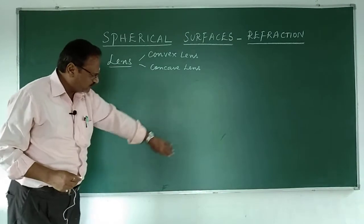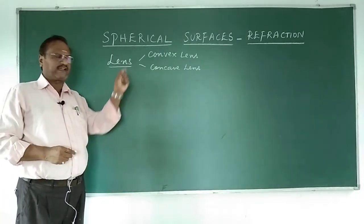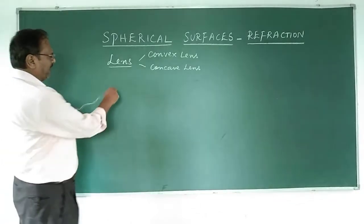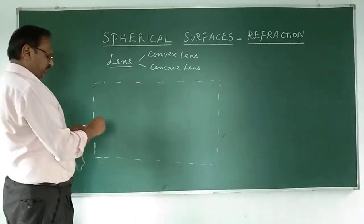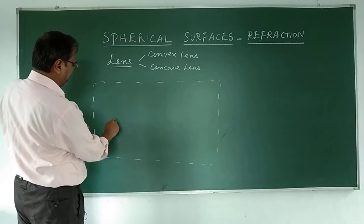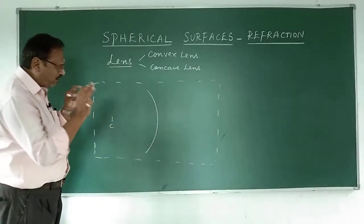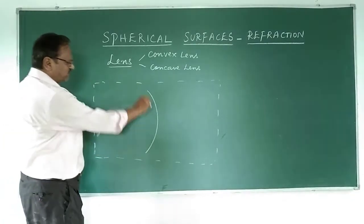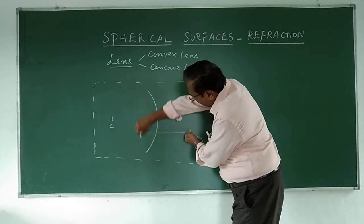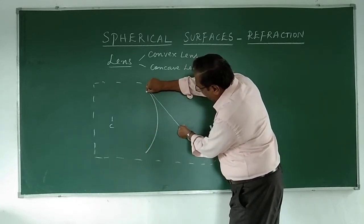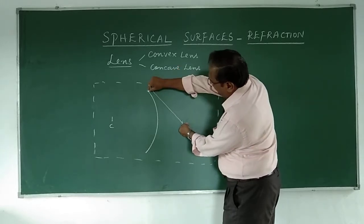Imagine this surface is like a thick glass slab — like the glass slab you see in the physics lab. Now I am going to draw a border. I will keep a center and draw an arc inside the glass slab — that is one surface. Then I come to the other side, keep another point as reference, and draw another arc. What you see now is called a lens.